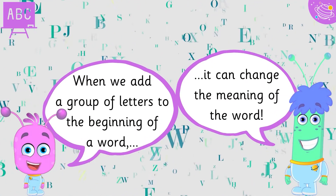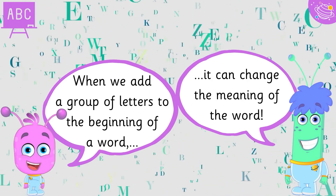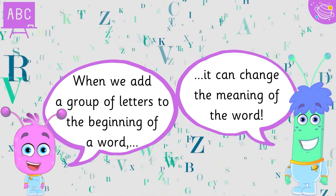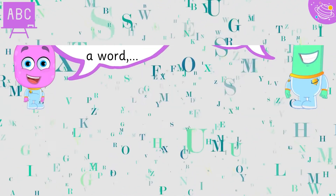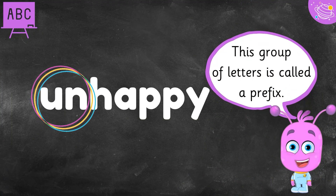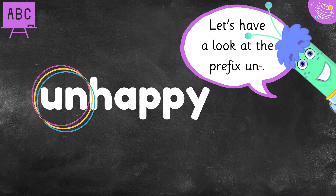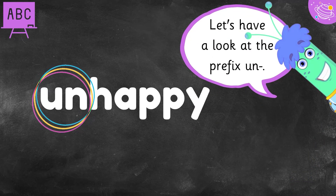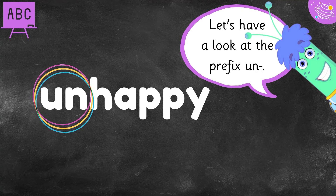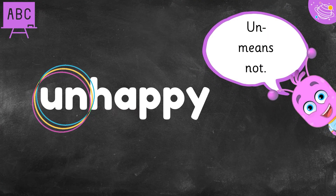When we add a group of letters to the beginning of a word, it can change the meaning of the word. This group of letters is called a prefix. Let's have a look at the prefix un. Un means not.